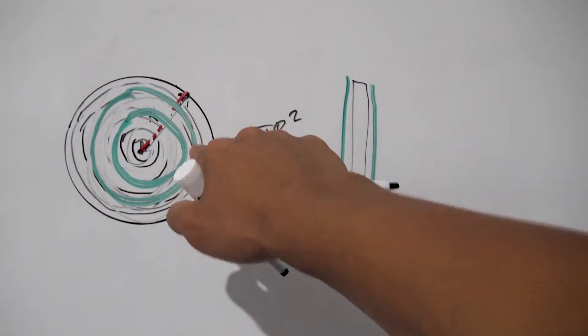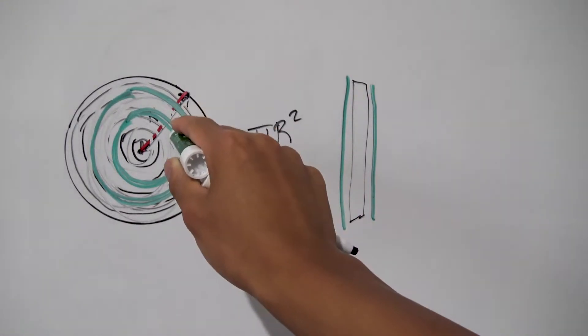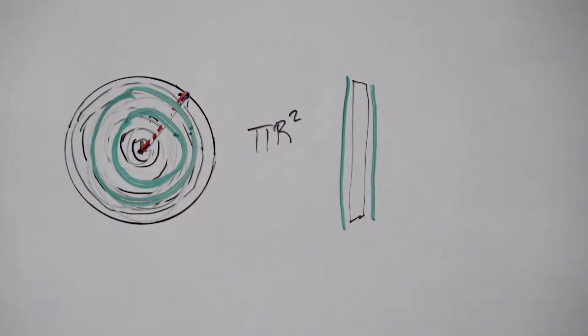But if we increase the number of rings in our circle here, well our green ring will get thinner and thinner and thinner. And as it gets thinner the circumference of these two boundaries of our ring here will get closer and closer and closer together. Meaning that if we let the number of our rings in our circle approach infinity, that means the inner circumference of our ring will pretty much be the same as the outer circumference of our ring.